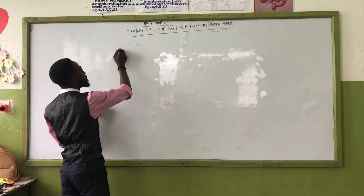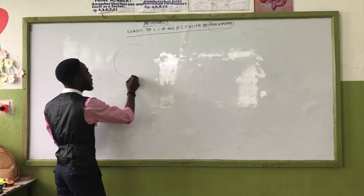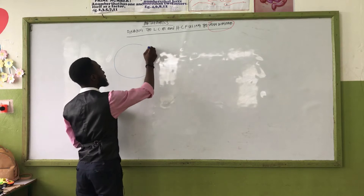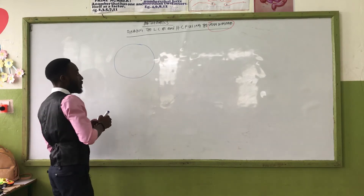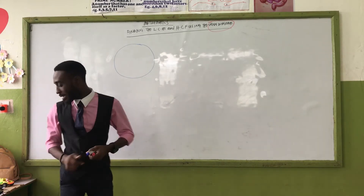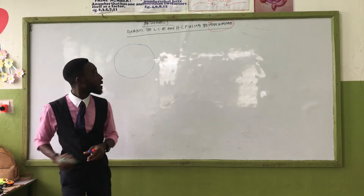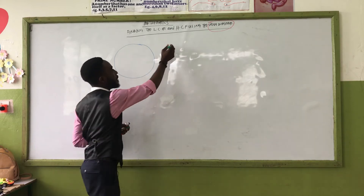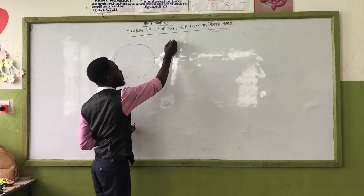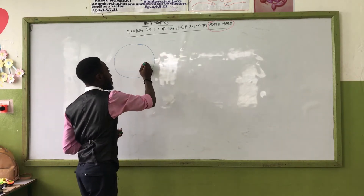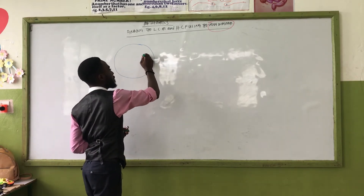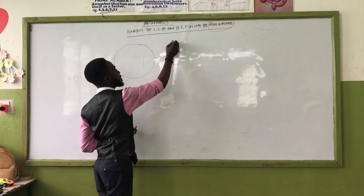So the Venn diagram — I'm drawing one part like this, and then the other part coming in like this.